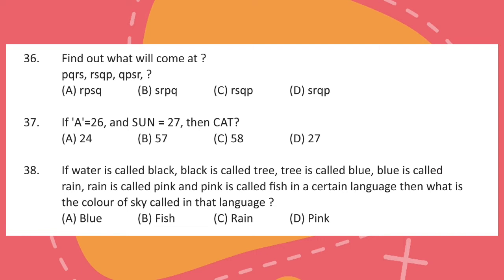Question 38: If water is called black, black is called tree, tree is called blue, blue is called rain, rain is called pink and pink is called fish in a certain language, then what is the color of sky called in that language?